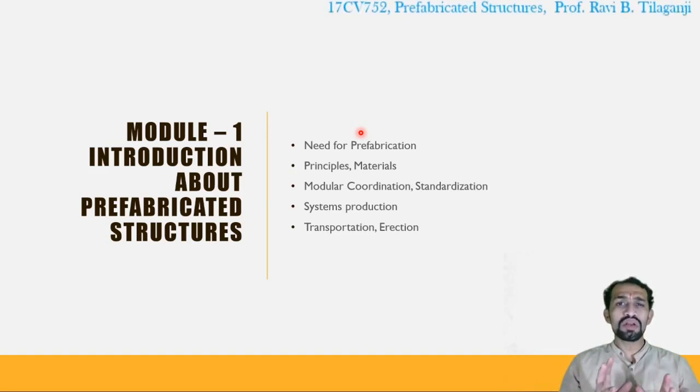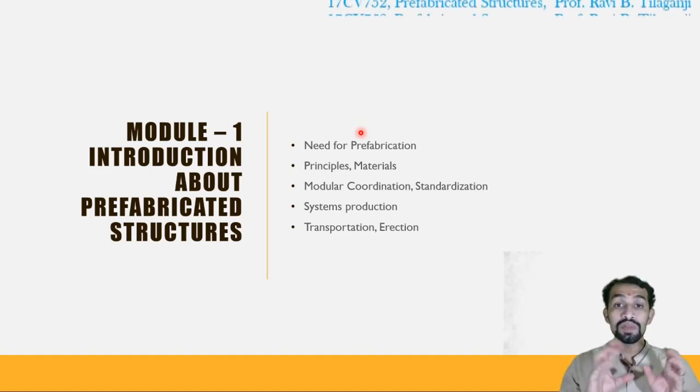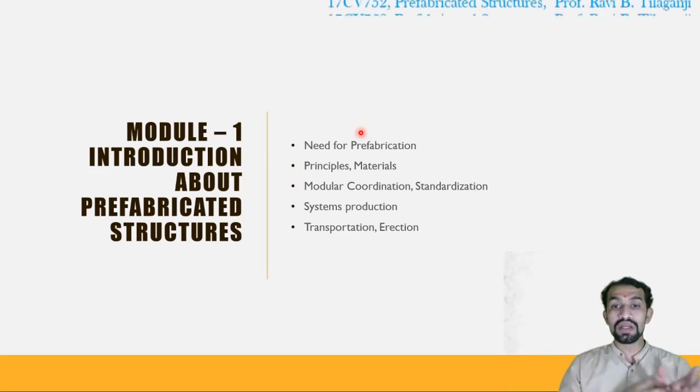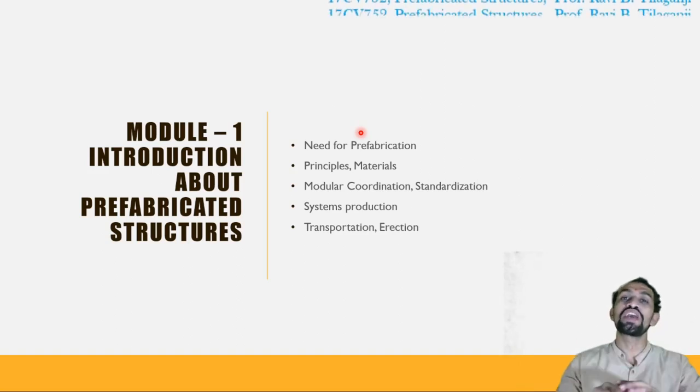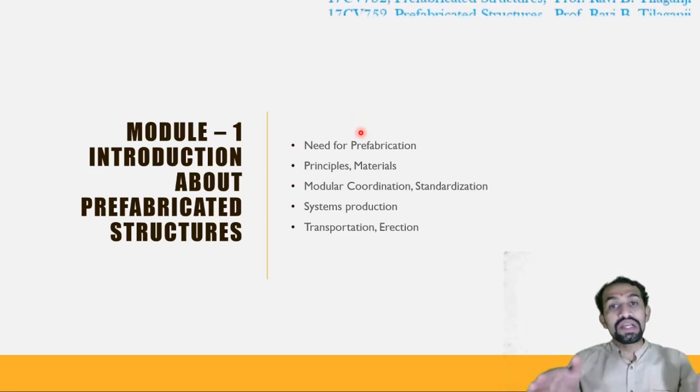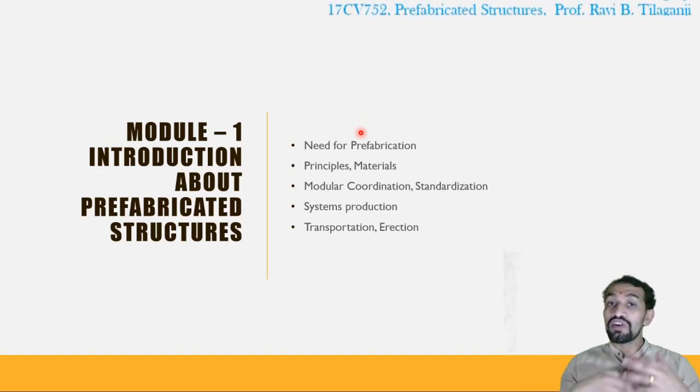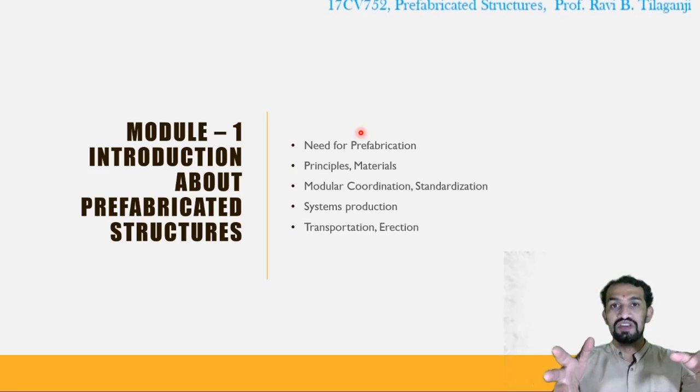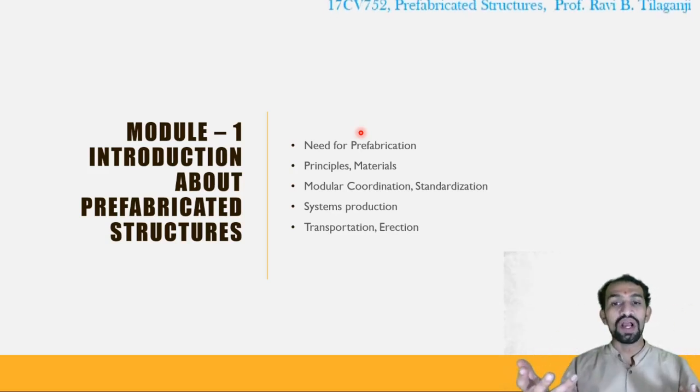Modular coordination. What is this modular coordination? Standardization. What standards we are going to use for prefabrication? Production systems. Systems of production. How the systems are there for preparing the production? What is transportation? What is erection? How we are going to transport the prefabricated material? We are not going to transfer the prefabricated material into a small type of vehicles. The huge vehicles are needed if a huge amount or huge size of section is there. Huge size of beam is there. Huge size of slab is there. Erection. How we are going to erect them? Whether with the help of skilled labors, unskilled labors or machineries or something huge machineries are required for erection.